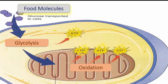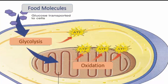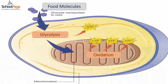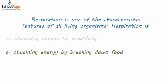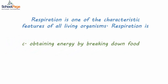In this process, glucose is subjected to a series of chemical reactions generating ATP. ATP is considered the energy currency of the cell. This process in which food molecules are broken down to generate ATP is also called cellular respiration. Hence, respiration is obtaining energy by breaking down food.